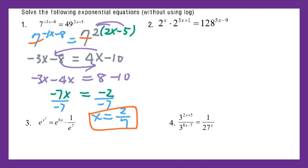For the second question we can make the same base 2. For the left side, this is a multiplication of powers so I add the exponents. So I got x plus 3x plus 1 equal to 128, which will be 2 to the seventh power.